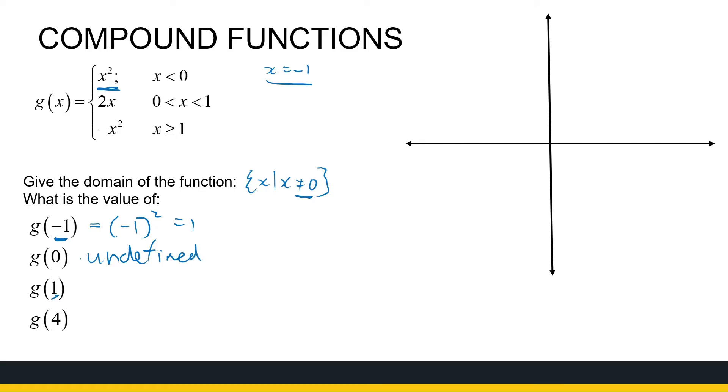g of 1. In which interval does 1, x equal to 1, fall into? Well, if you look at x equal to 1, it's not in the second interval, but it is in the last interval, because that's where x is greater than or equal to 1. So that will be minus whatever my x value is squared. So it's minus 1 squared, so it's minus 1. g of 4. 4 also falls, where x is equal to 4 is also in the last interval. So that will be minus 4 squared, which is minus 16. So that's some function values.